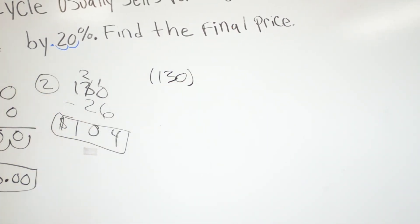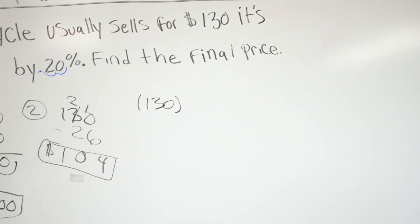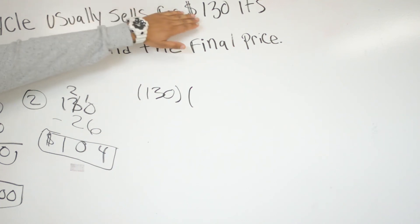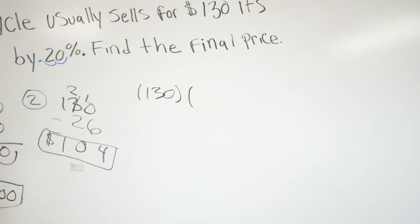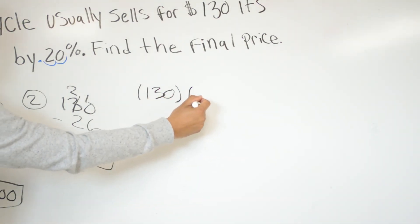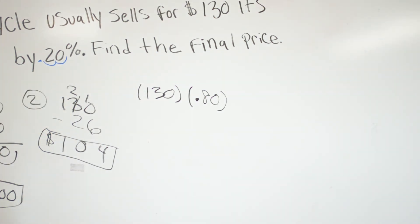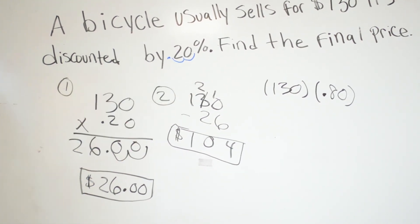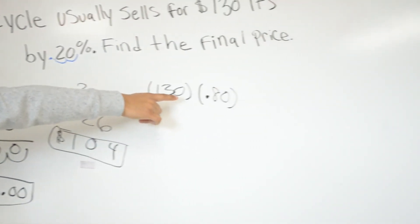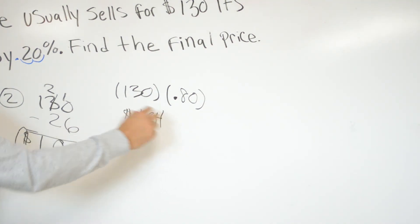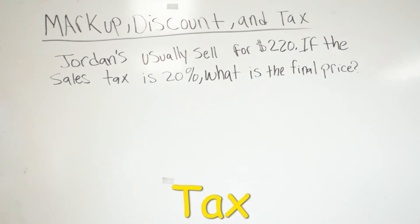The second method to solve the discount problem: take the original price of $130 and multiply by the percentage you're actually paying. Since we get a 20% discount, we're paying 80%. So 80% plus 20% equals 100% — we're only paying 80%, so we multiply 130 times 0.80. That gives you the same answer of $104.